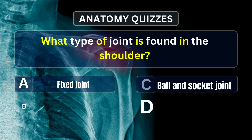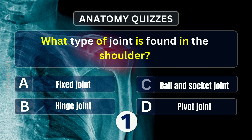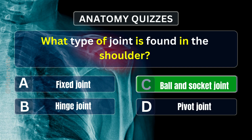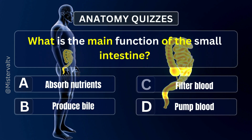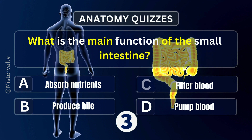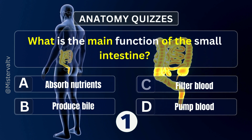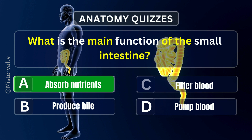What type of joint is found in the shoulder? Answer. C. Ball and socket joint. What is the main function of the small intestine? Answer. A. Absorb nutrients.